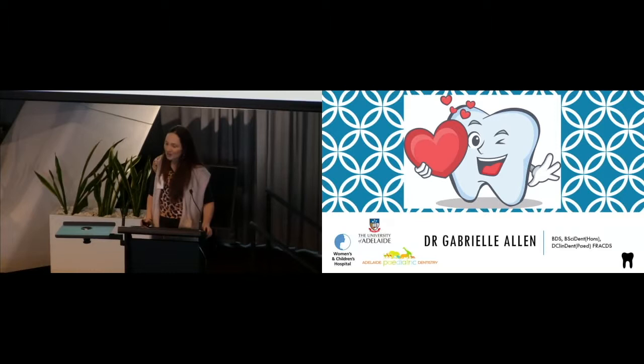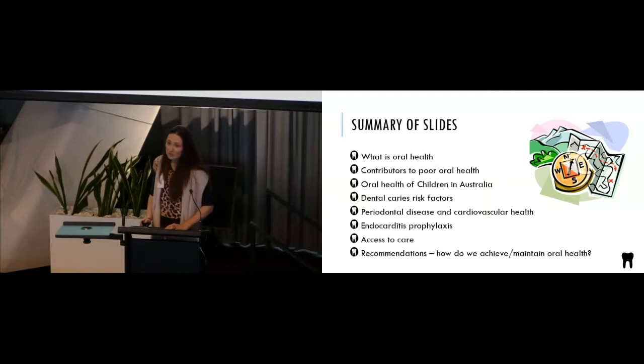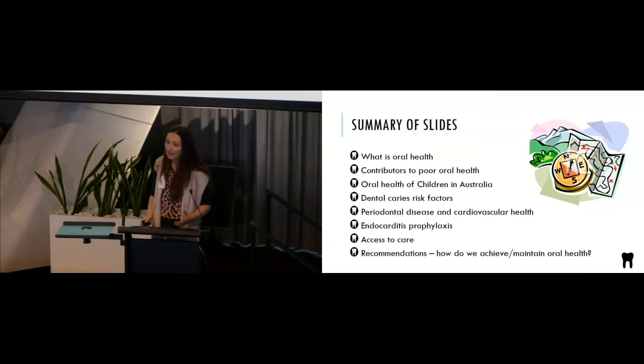So I'm just going to really give some general information about oral health and dentistry and the oral health status of our children here in Australia at the moment. A bit of a summary of slides, we'll go through what is oral health, contributors to poor oral health, the oral health of our children in Australia, some dental caries risk factors and how that can be more specific to certain children, periodontal disease and cardiovascular health, a bit about endocarditis prophylaxis, some access to care and some recommendations.